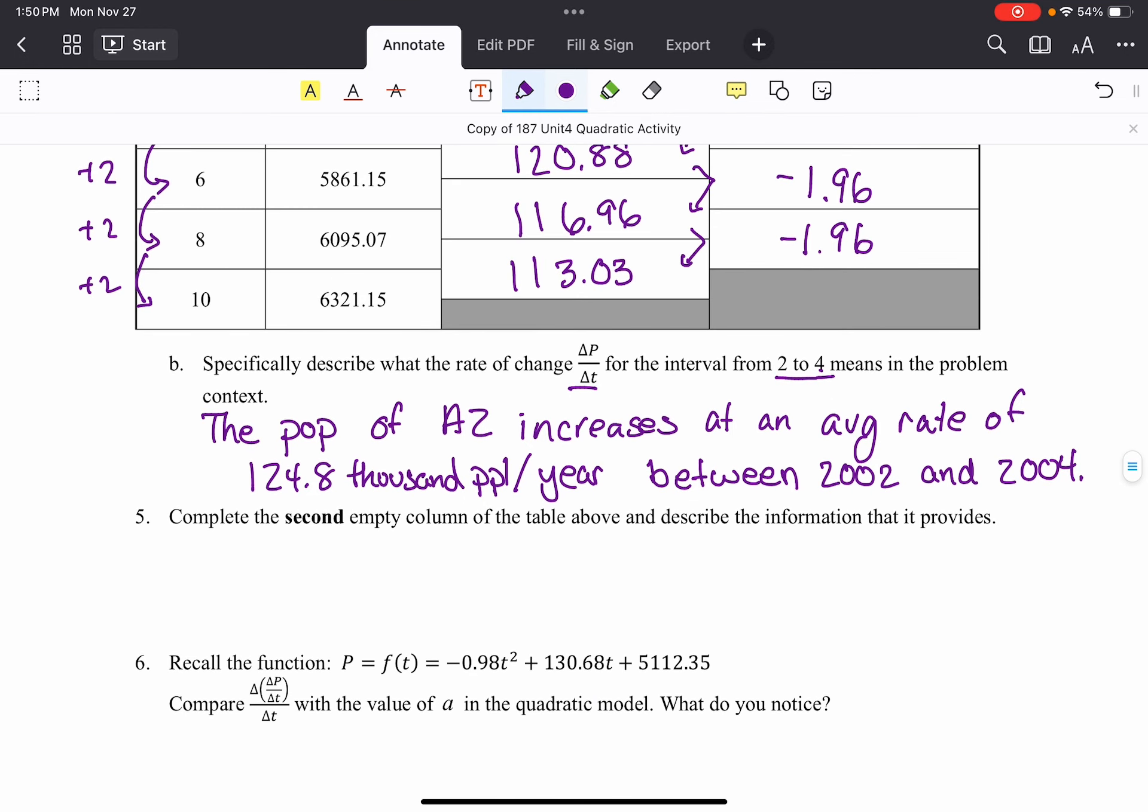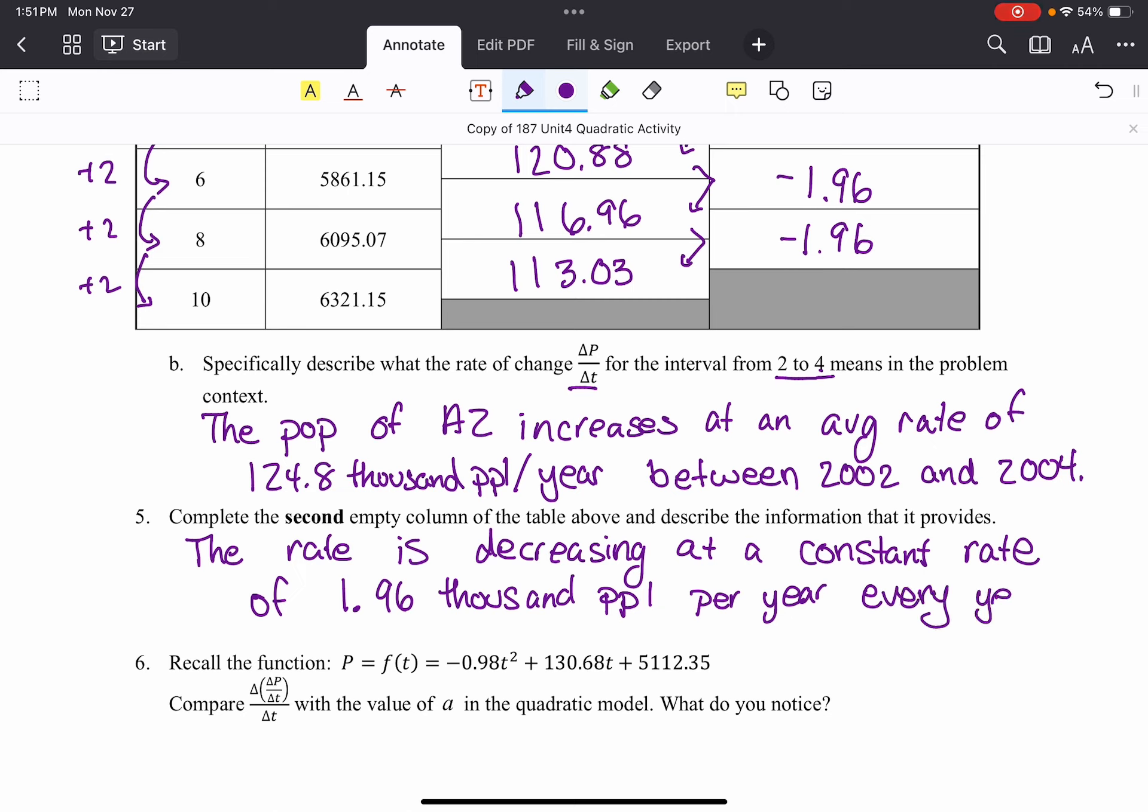All right, so we completed the second time. Describe what this information tells us. Well, as we mentioned earlier, the rate is decreasing at a constant rate. So the rate is decreasing at a constant rate of 1.96 thousand people per year every year. So every year that goes by, the rate decreases by that much.